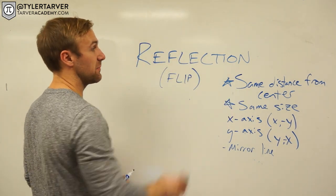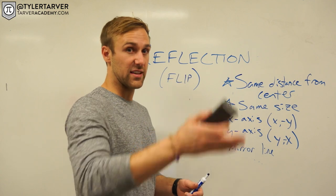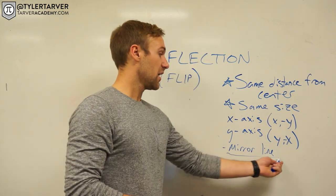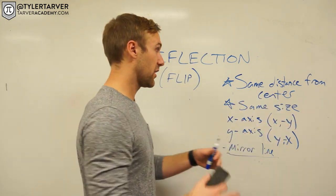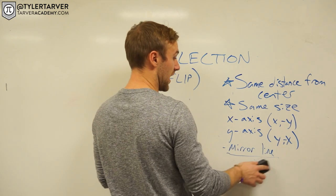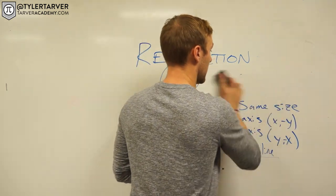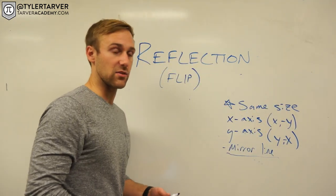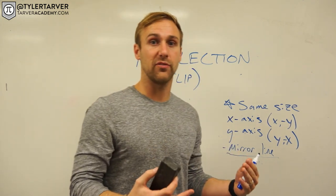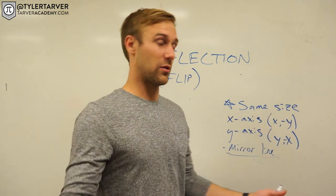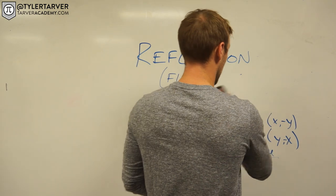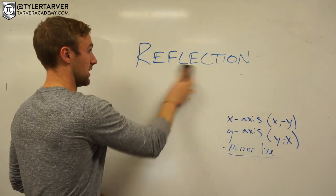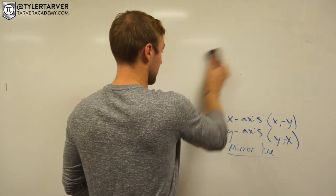Two key things. It's the same distance from the center because that center is called your mirror line, and that's going to be the same distance for each of these points from that mirror line. And then we're also looking at the same size. We're not changing the size when we do a reflection, we're just changing where it's located. And it's going to be a flip on the other side. You know it's a flip, you know it's a reflection.